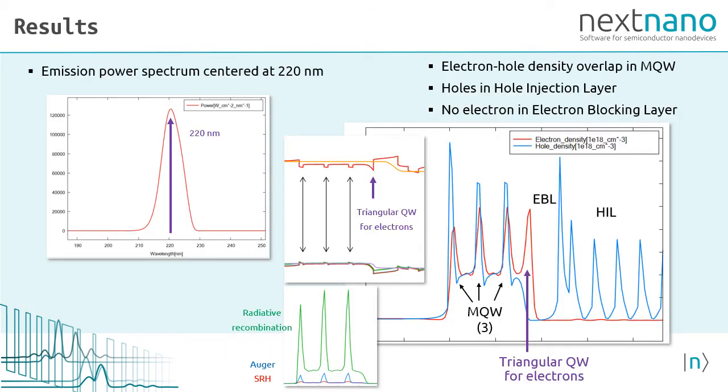Now, let's look at the emitted power spectrum. It is centered at 220 nanometers, which is in the desired UVC range. Our multi-quantum well region consists of three quantum wells for the electrons and three quantum wells for the holes. This is where the emission takes place.